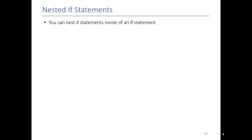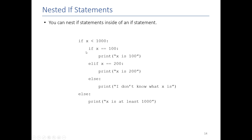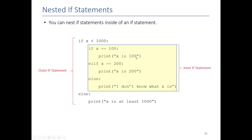For my final trick today, we're going to talk about nested if statements. Up until now we had only a little bit of code inside each if statement — for example, if your age is greater than 50, print 'age is just a number.' But you can put as much code as you want inside an if statement, including another if statement. Here we check if x is less than 1000, and inside that, we check if it's 100, 200, and so on. We have an outer if/else and an inner if statement. You can nest as many levels as you need.